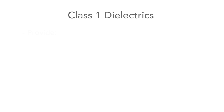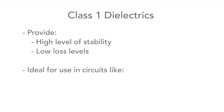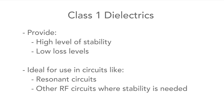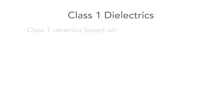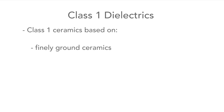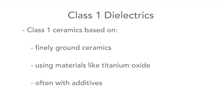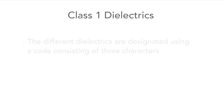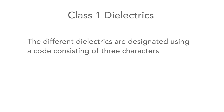The class 1 dielectrics provide a high level of stability, they exhibit low loss levels, and they're ideal for use in resonant circuits. These are generally very good for radio frequency circuits and other areas where low value but accurate and stable capacitors are needed. The class 1 ceramics are based on finely ground materials using compounds like titanium oxide, often with additives such as zinc, zirconium, niobium, magnesium or other rare earths and their oxides. The different capacitors' dielectrics are designated with letters to indicate their performance.